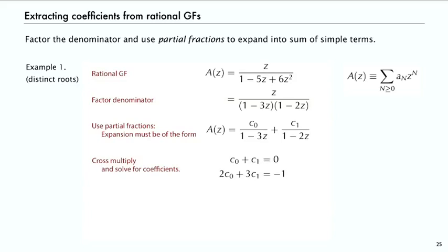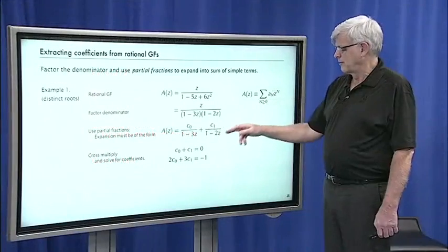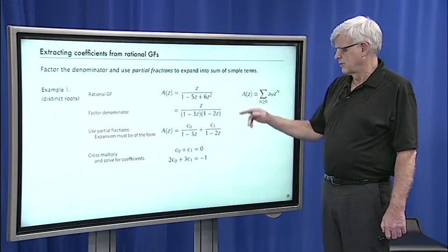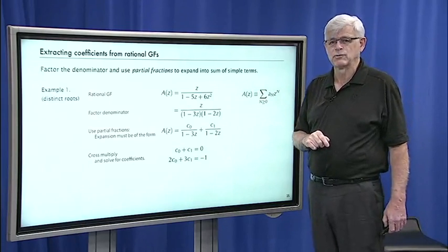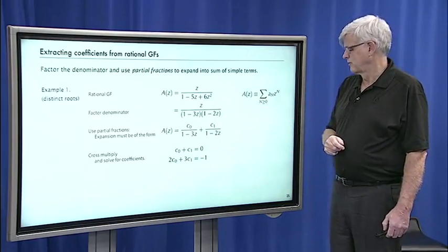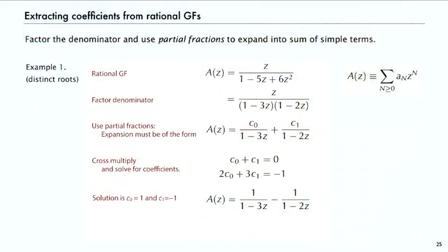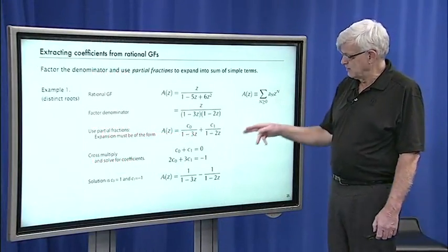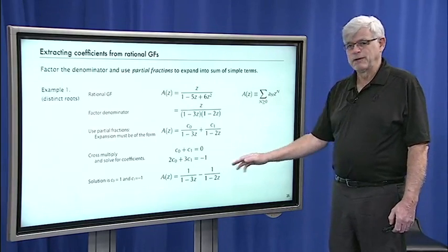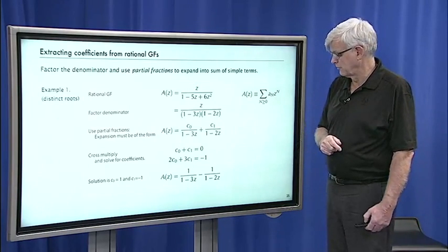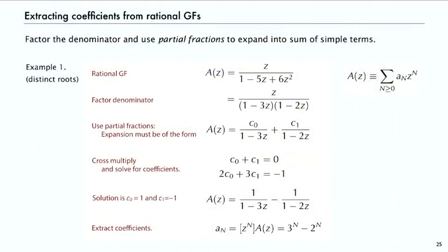We cross multiply and set coefficients of the constant equal and coefficients of z equal, then solve. Cross multiplying gives 1 minus 2z times C0 plus 1 minus 3z times C1 over the product 1 minus 3z times 1 minus 2z, and that has to equal z. So C0 plus C1 equals 0, and minus 2C0 minus 3C1 equals 1. Solving those two equations gives C0 equals 1 and C1 equals minus 1. So A(z) equals 1 over 1 minus 3z minus 1 over 1 minus 2z, and therefore a_n equals 3 to the n minus 2 to the n.